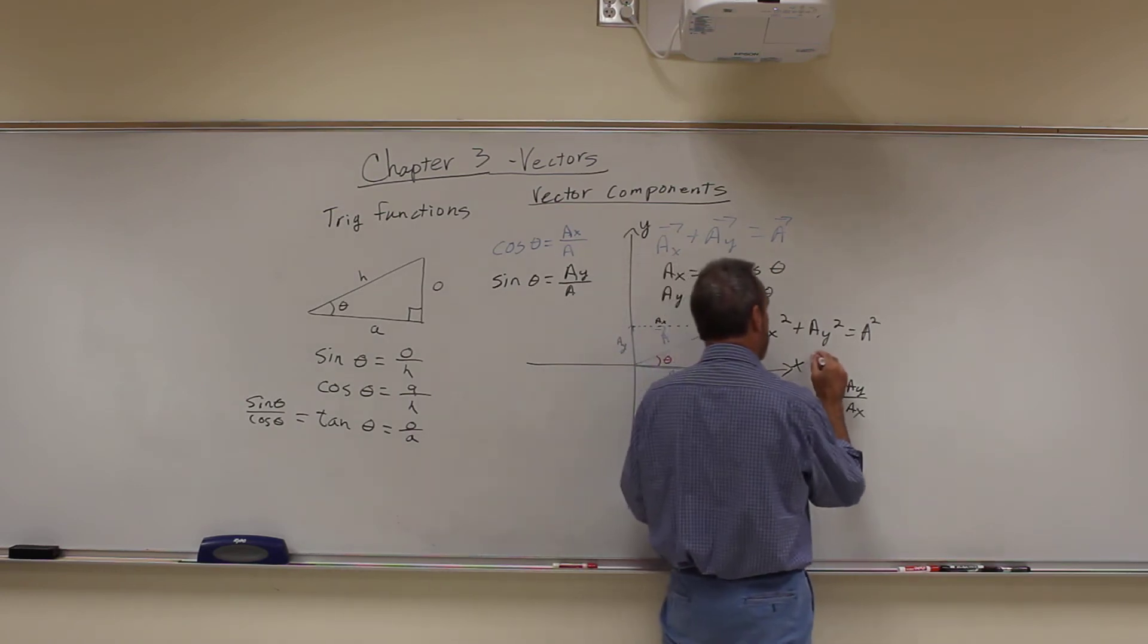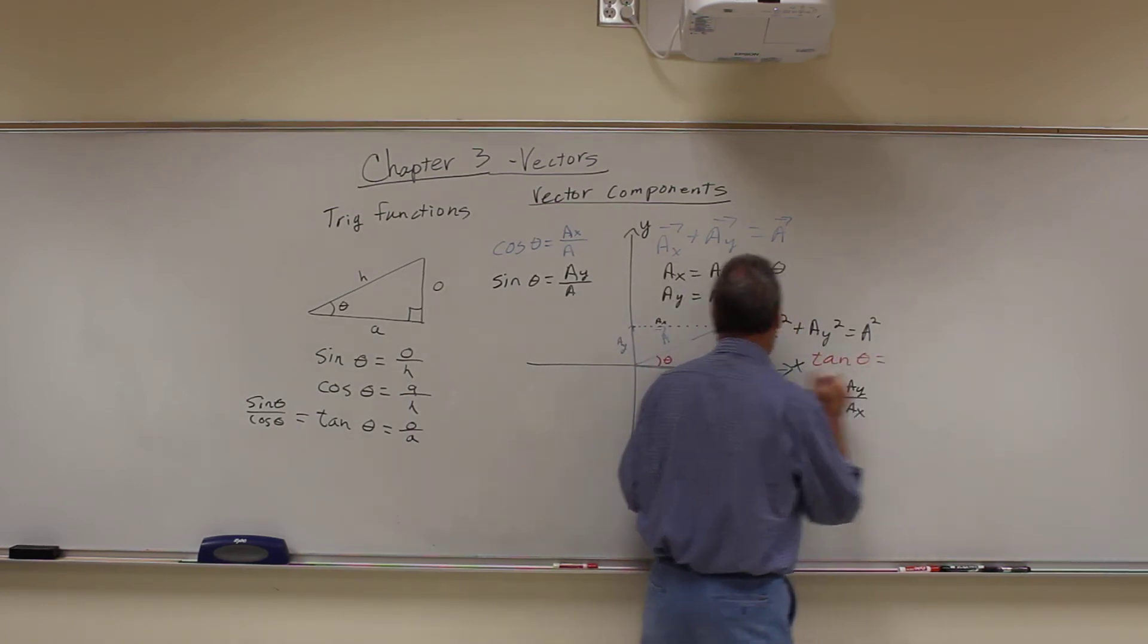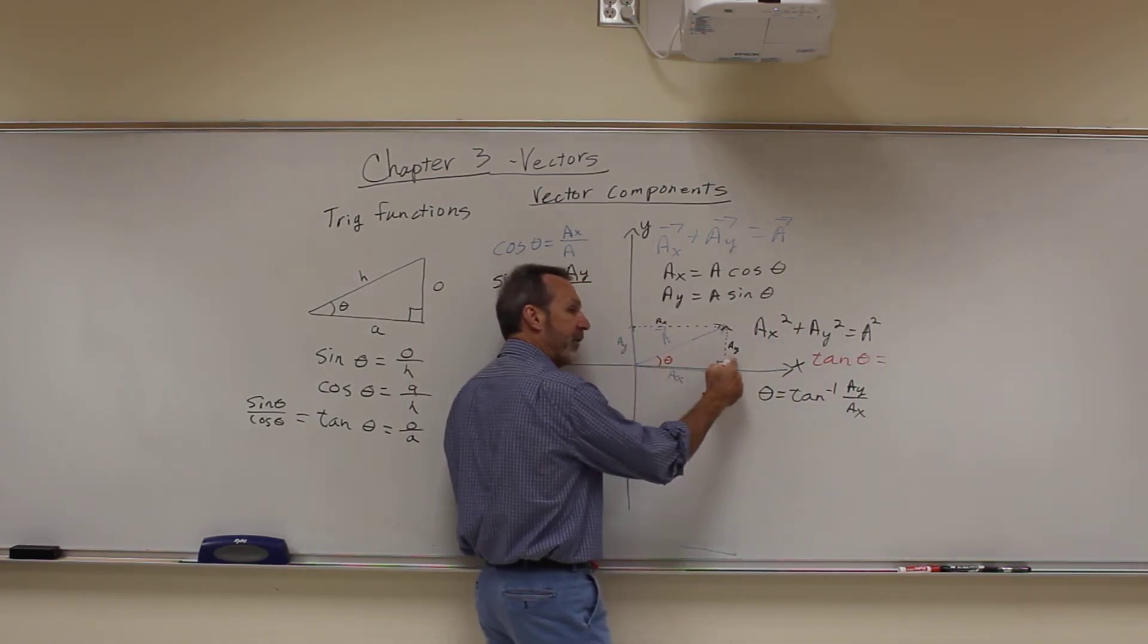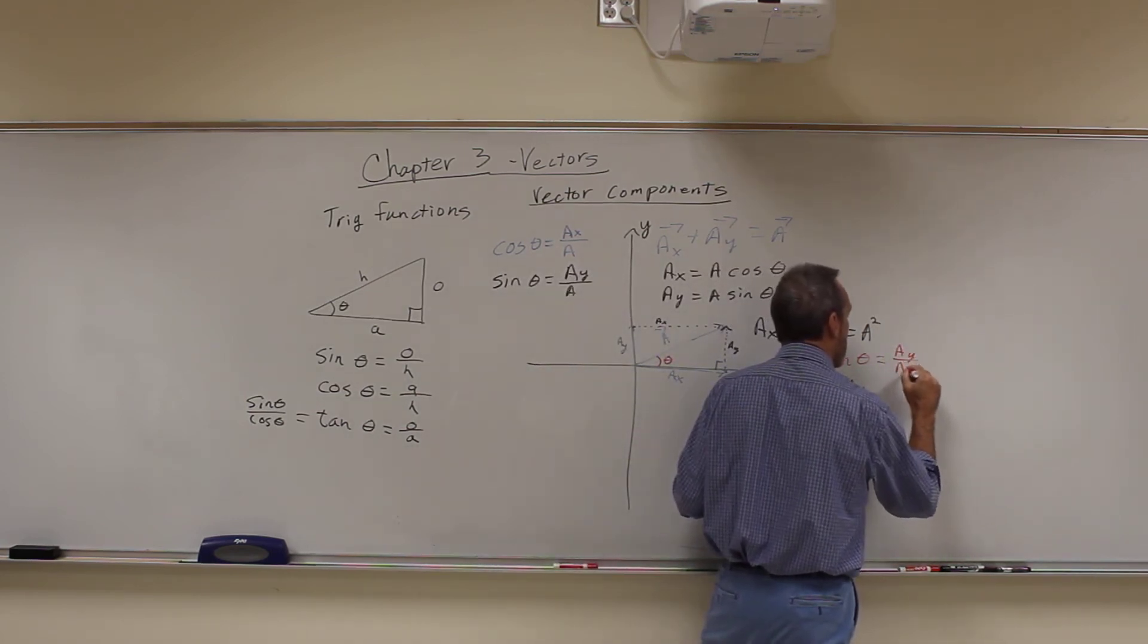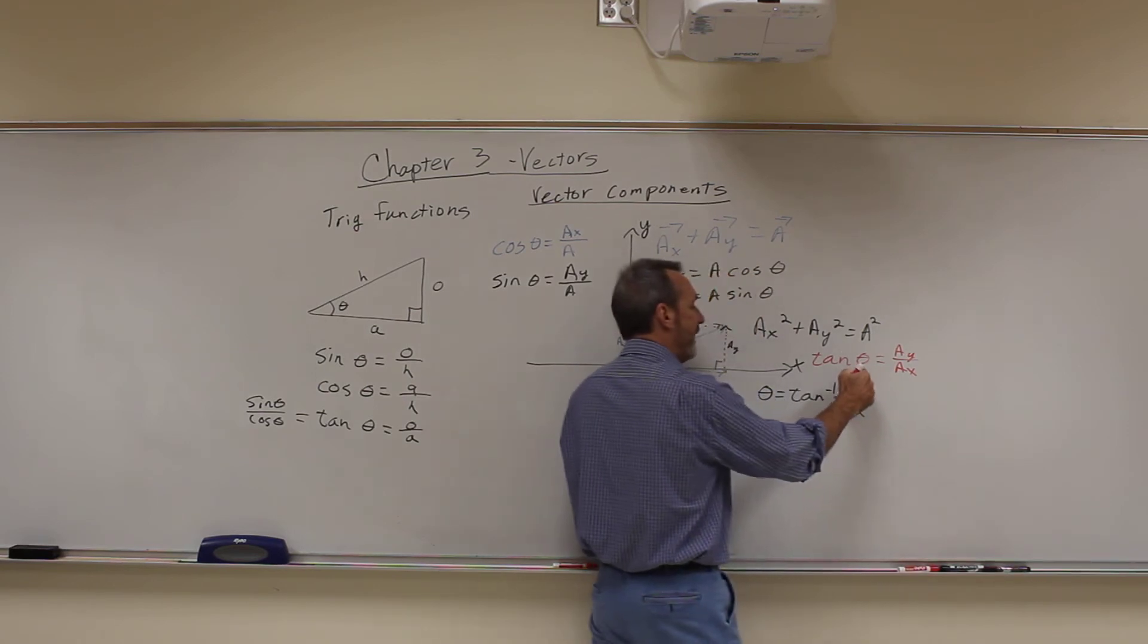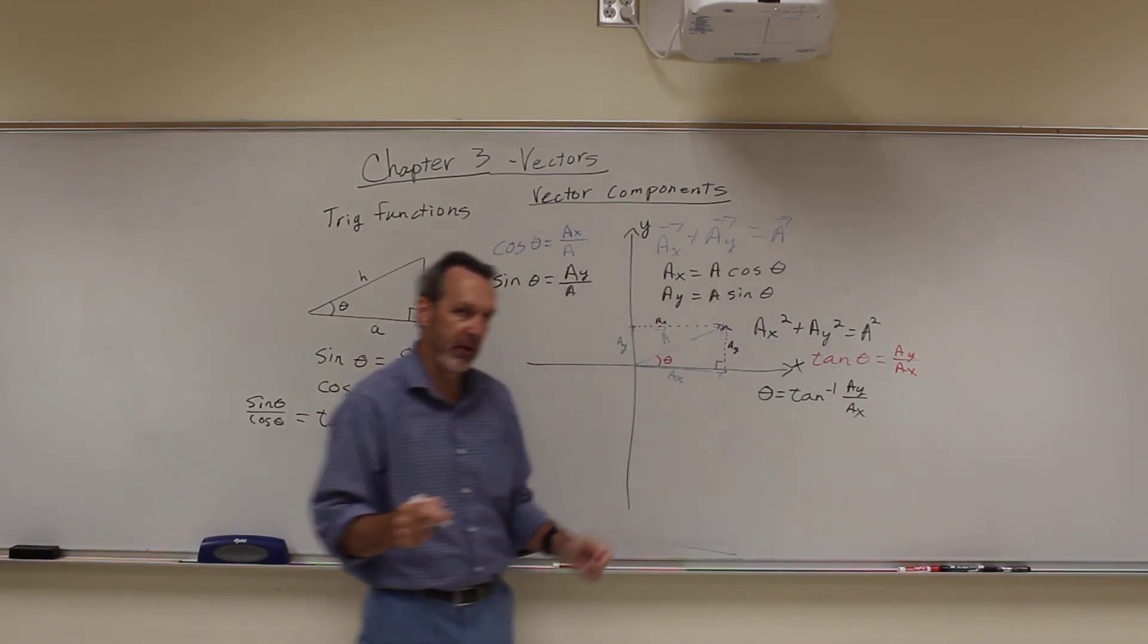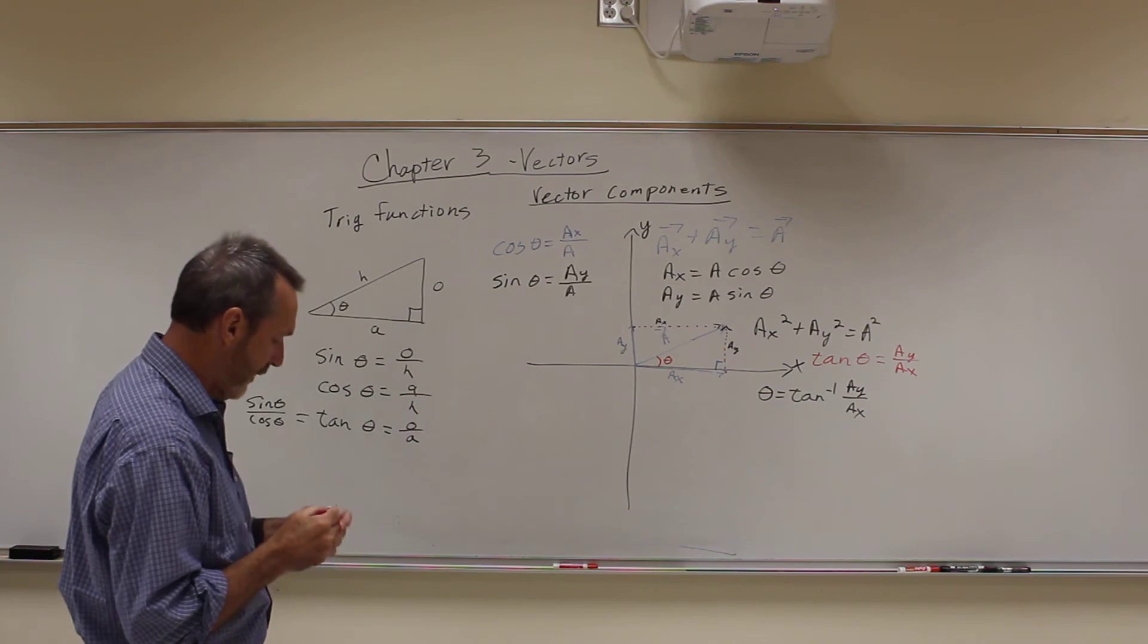And I guess I skipped a step here. What I really said was tangent of theta is opposite, so this is theta opposite as AY over AX. But if I want to solve it for theta, I have to do the inverse or the arctangent to figure out what that is.